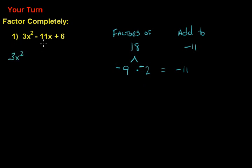So 3x squared. Instead of minus 11x, we get minus 9x and minus 2x. And we still have our plus 6 at the end. So now, there's four terms. We're ready for factor by grouping.